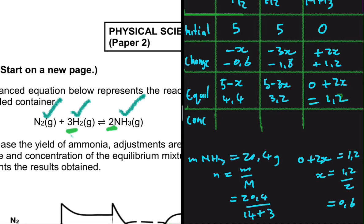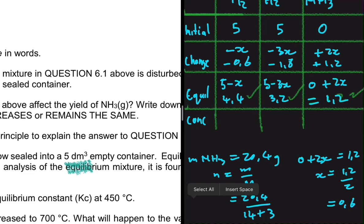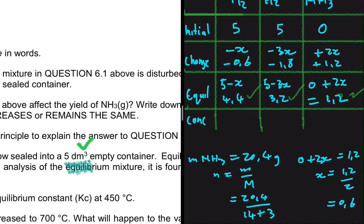Now we need the concentration at equilibrium. To find the concentration, we divide the number of moles by the volume. The volume is given as 5 decimeter cubed. So: 4.4 divided by 5 gives 0.88 for N₂; 3.2 divided by 5 gives 0.64 for H₂; and 1.2 divided by 5 gives 0.24 for NH₃.